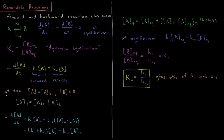Assume that at time equals zero the concentration of A equals A0 and the concentration of B equals zero. This means that the concentration of B as a function of time equals A0 minus A of T.